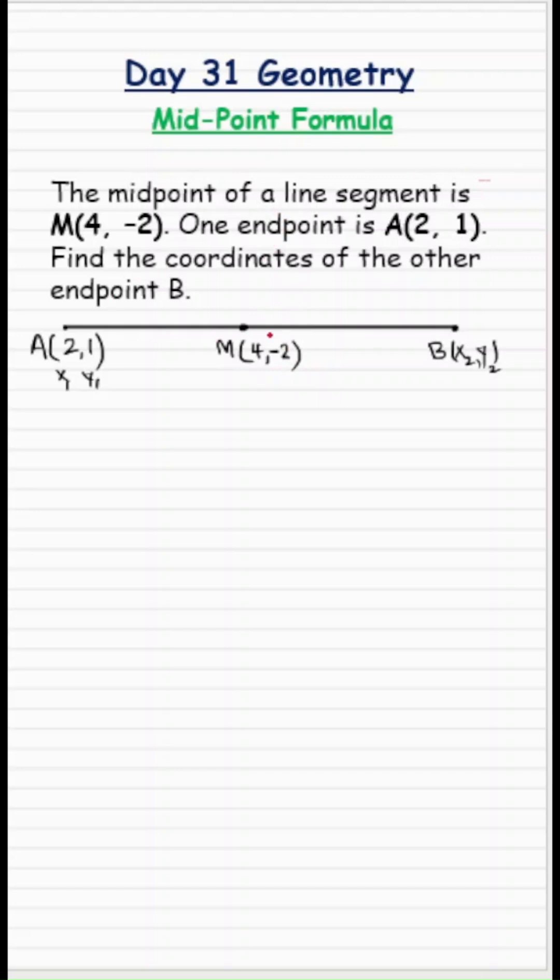Day 31 of geometry. In today's question, the midpoint of this line segment is M(4, -2). One endpoint is A(2, 1). We need to find the coordinates of the other endpoint B.